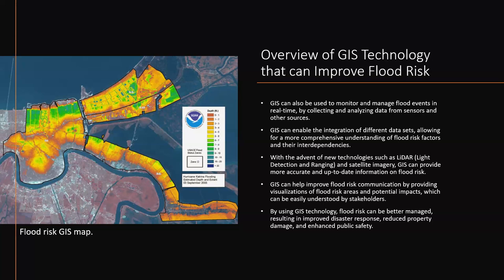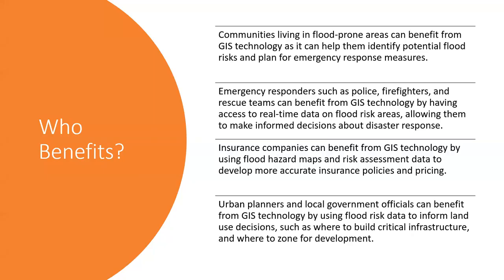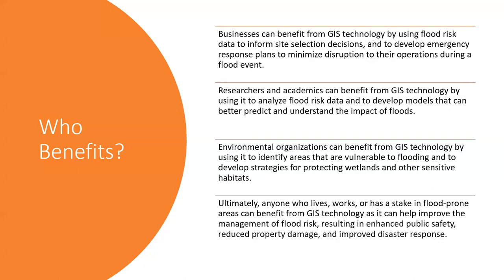GIS can also be used to monitor and manage flood events in real time, and integrate different data sets for a more comprehensive understanding of flood risk factors and their interdependencies. With new technologies such as LIDAR and satellite imagery, GIS can provide more accurate and updated information, as well as improved flood risk communication through visualizations of flood risk areas and potential impacts — easily understood by stakeholders and the community. Those who benefit include the community, emergency responders, insurance companies, urban planners, local government officials, businesses, researchers, academics, and environmental organizations.